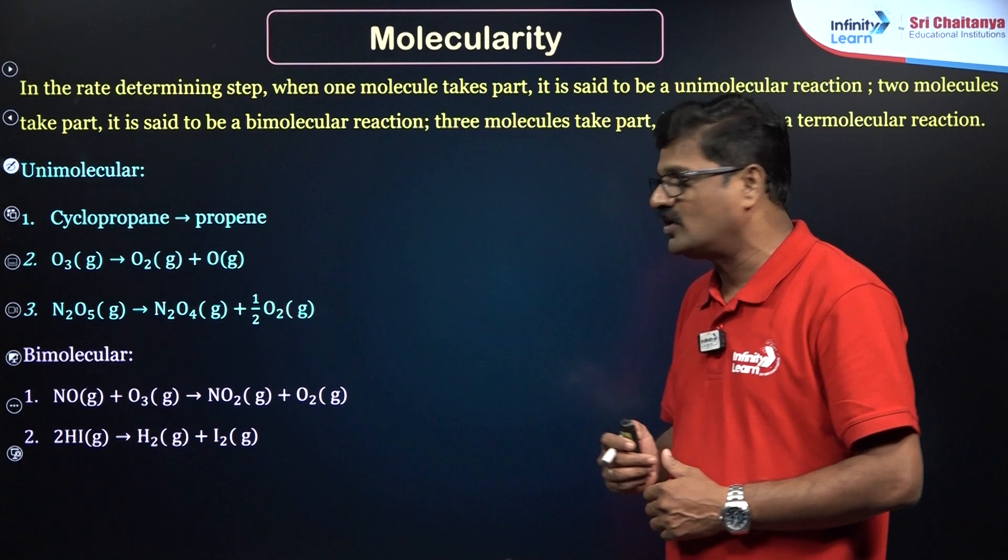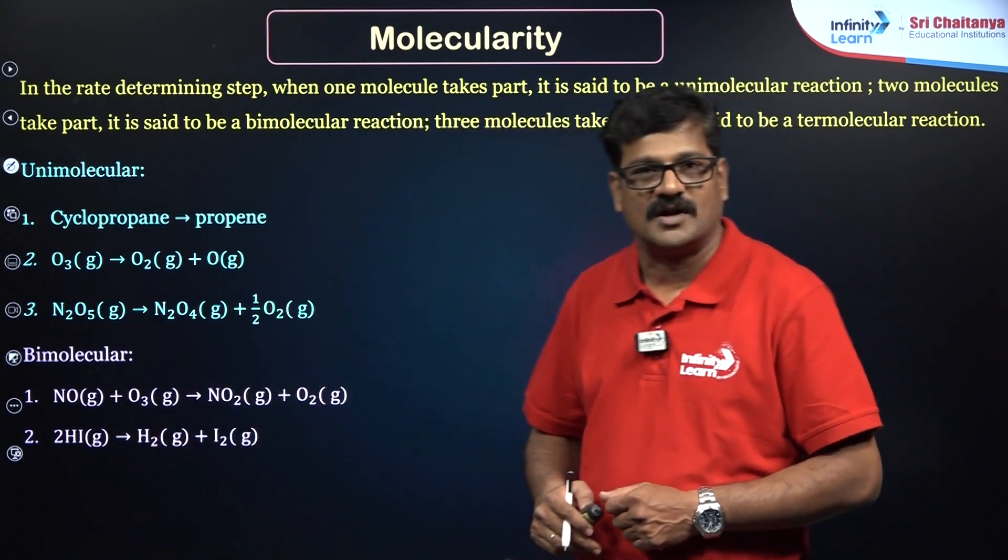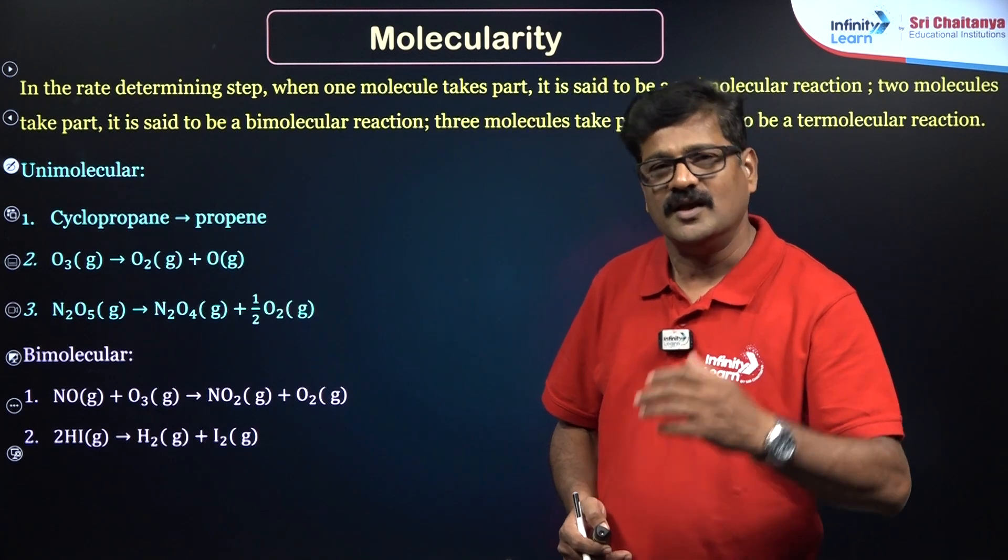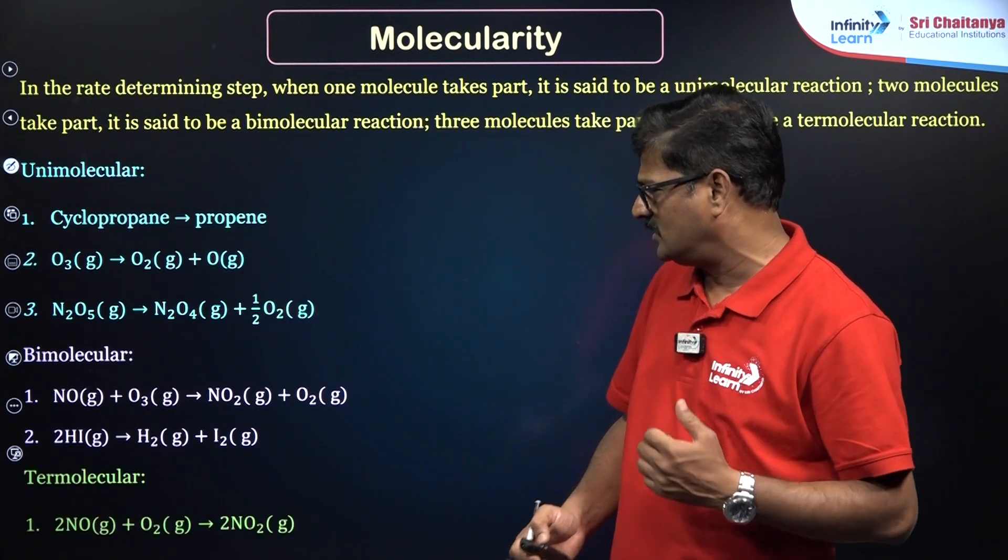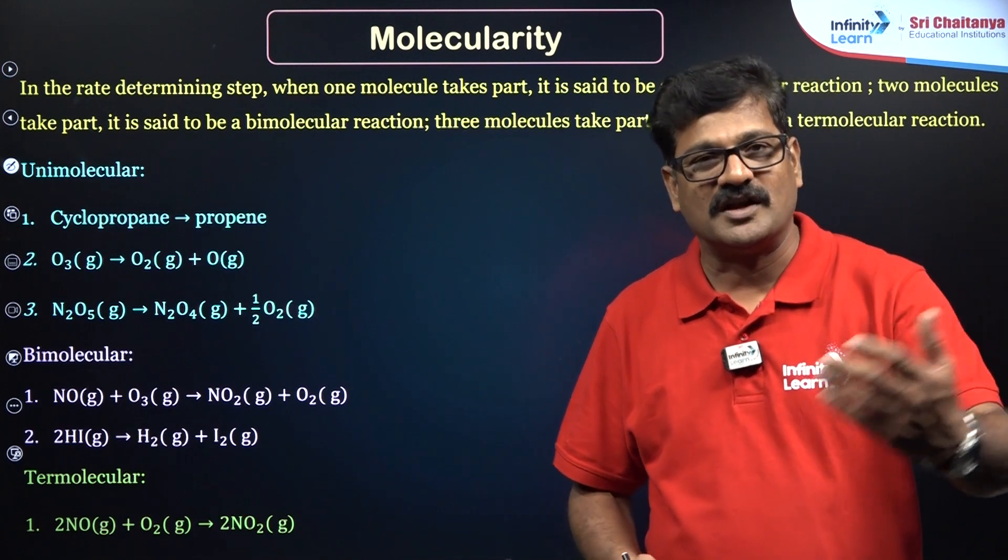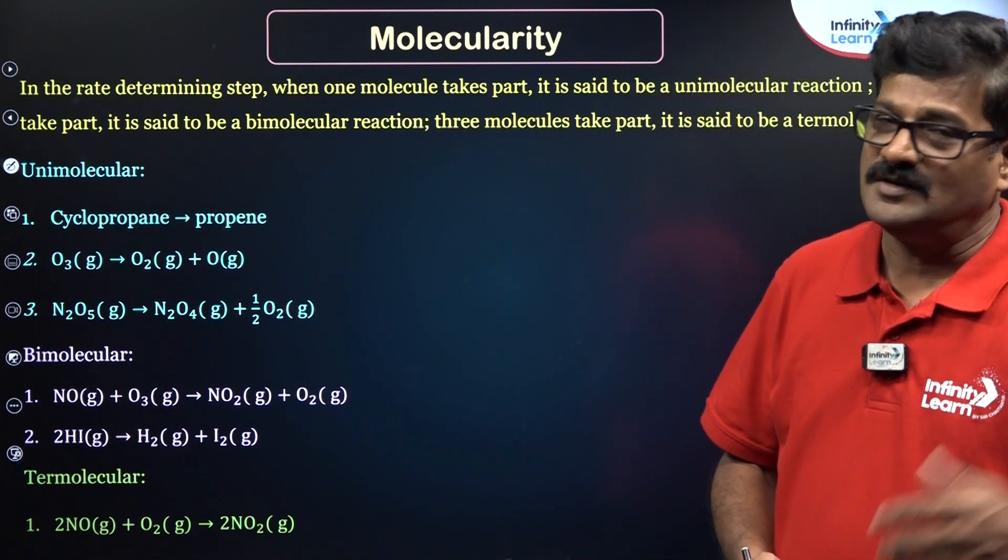Let us talk about bimolecular reactions. Two reactant molecules are involved—you can also say termolecular. 2NO + O₂ gives 2NO₂. Sometimes molecularity can be equal to order, but may not be equal as well.